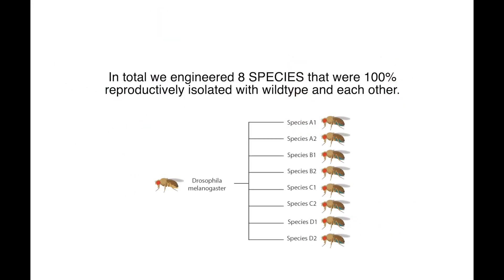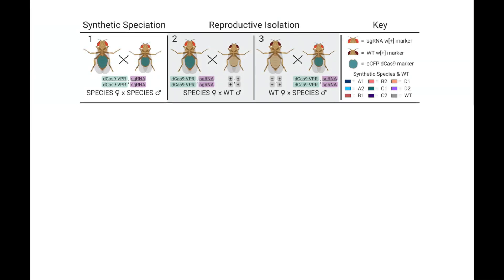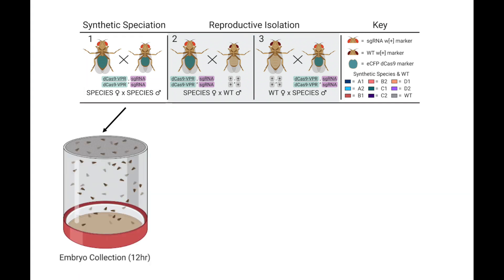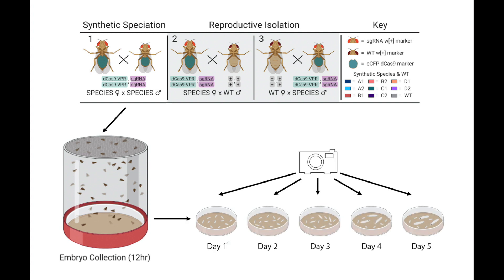In total, we engineered 8 species that were 100% reproductively isolated from the wild type and from each other. To demonstrate speciation, we performed bidirectional outcrosses of all 8 species to the wild type and to themselves. We first let the flies mate in the fly chamber for 12 hours, then scored the embryos after 24 hours and the larvae after 48 hours, and continued recording changes consecutively for 5 days.